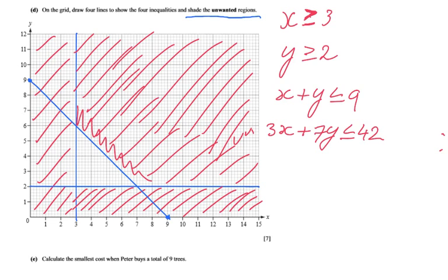Perhaps the most difficult looking one, because they're all the same. 3x plus 7y, smaller or equal to 42. Again, or equal. Same here, by the way. So just a normal line.